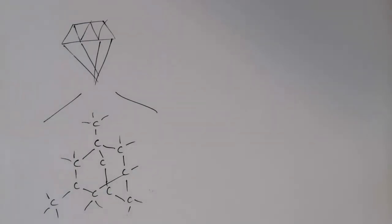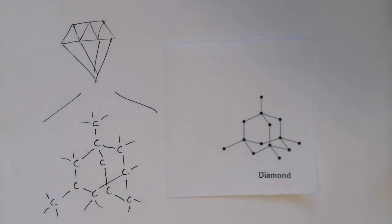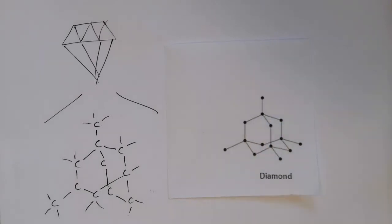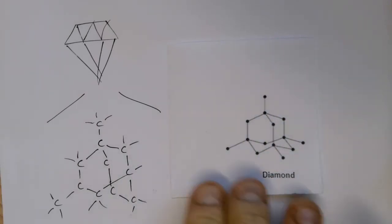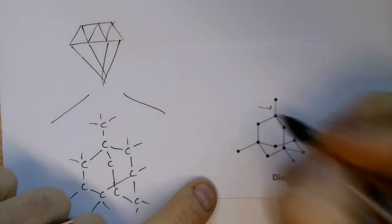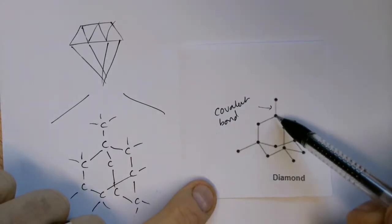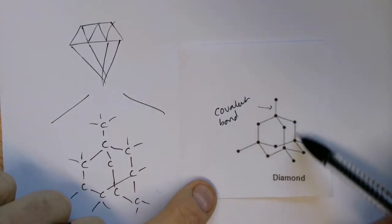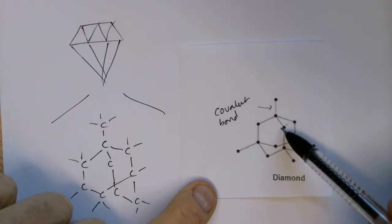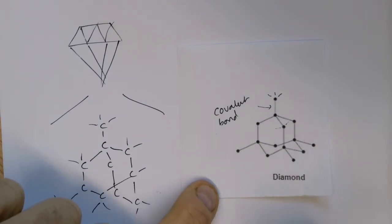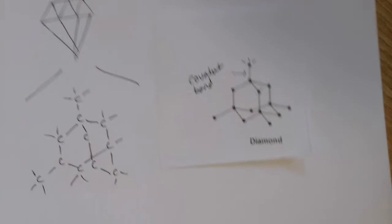It's quite a difficult structure to draw, but here we can see one from a textbook. These black dots represent carbon atoms and the lines between them represent covalent bonds. If we look at a carbon atom, it's bonded to four others — each one is bonded to four others, and so on. That gives diamond some very specific properties which are related to its use.